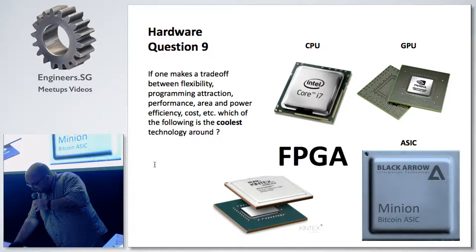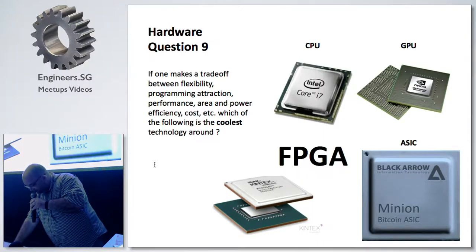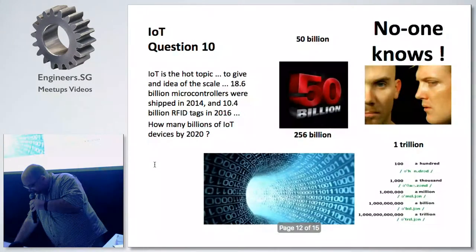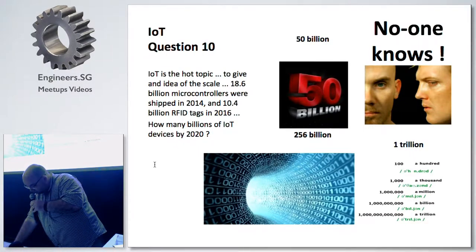When putting capacitors in parallel, you end up with this ratio of 1 over C1 plus 1 over C2. The coolest technology is, obviously, FPGA.